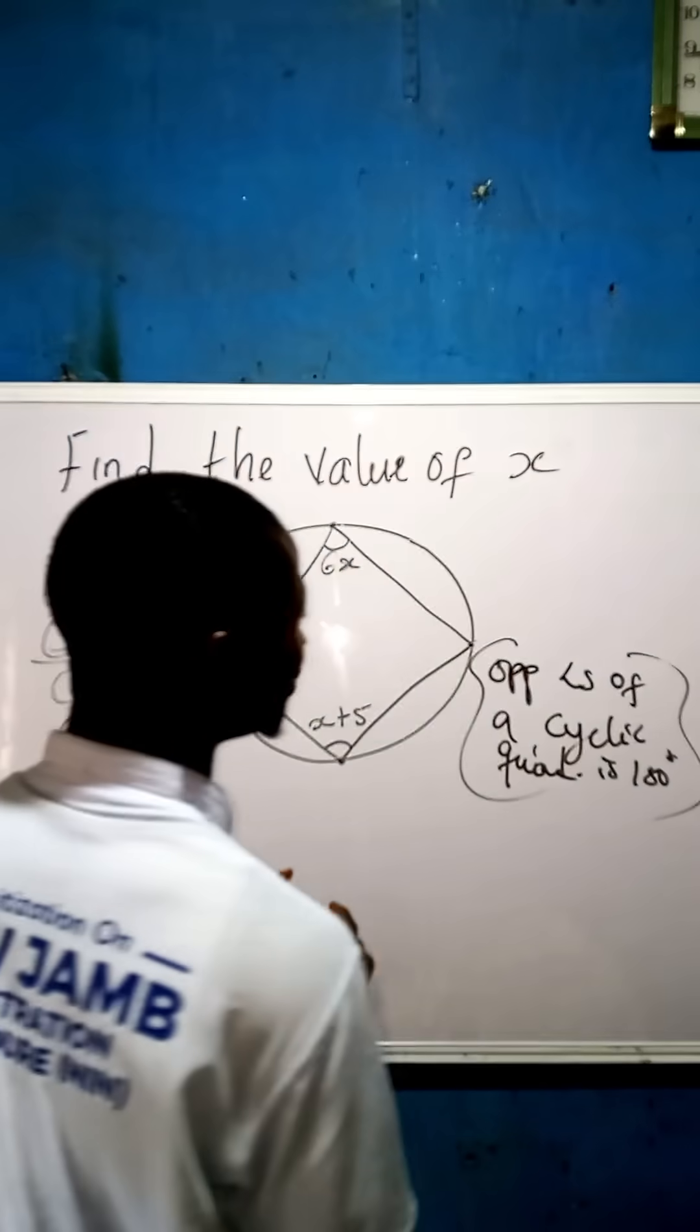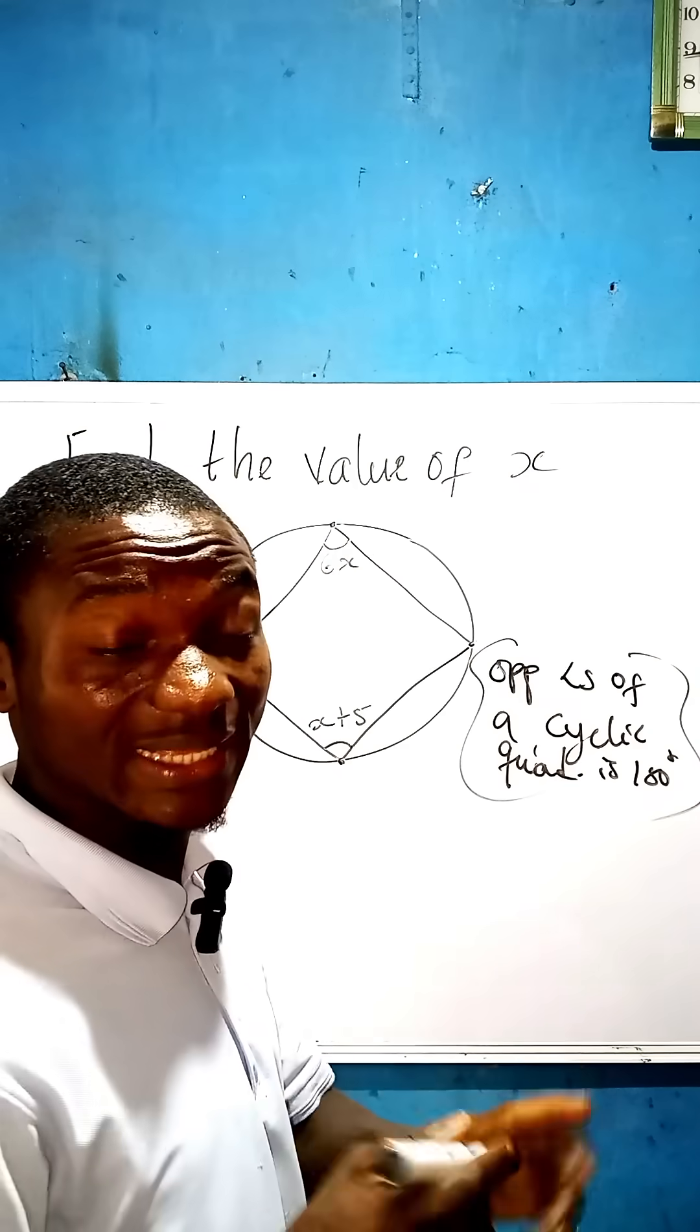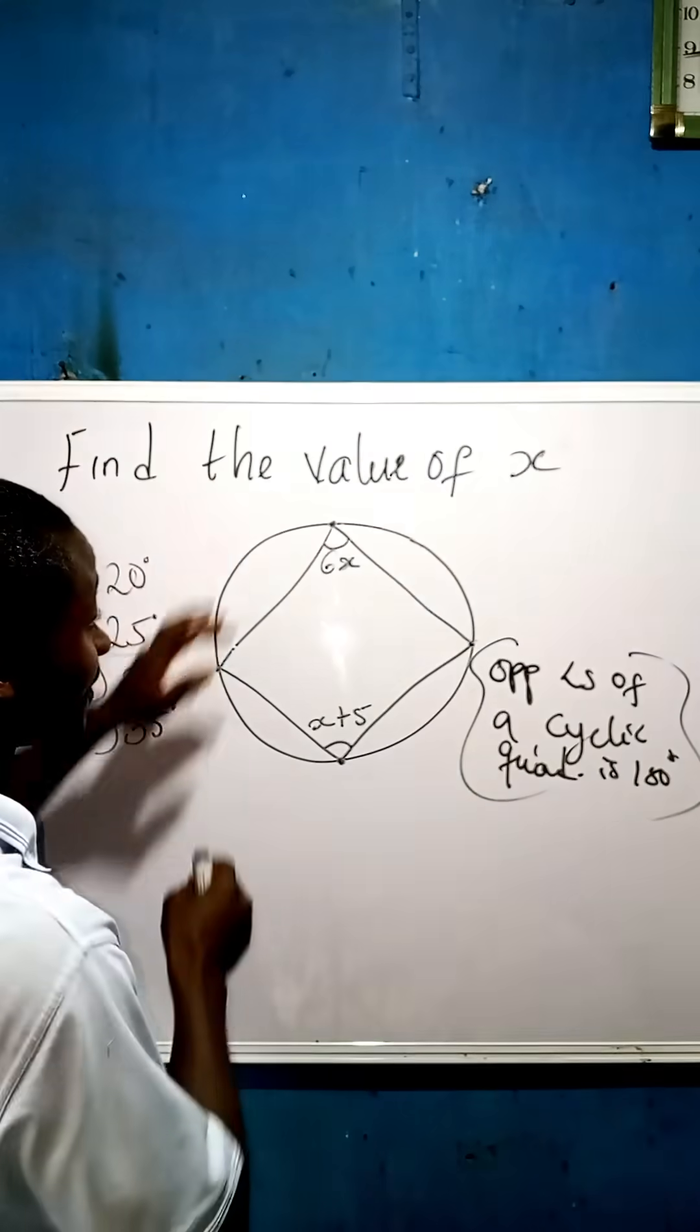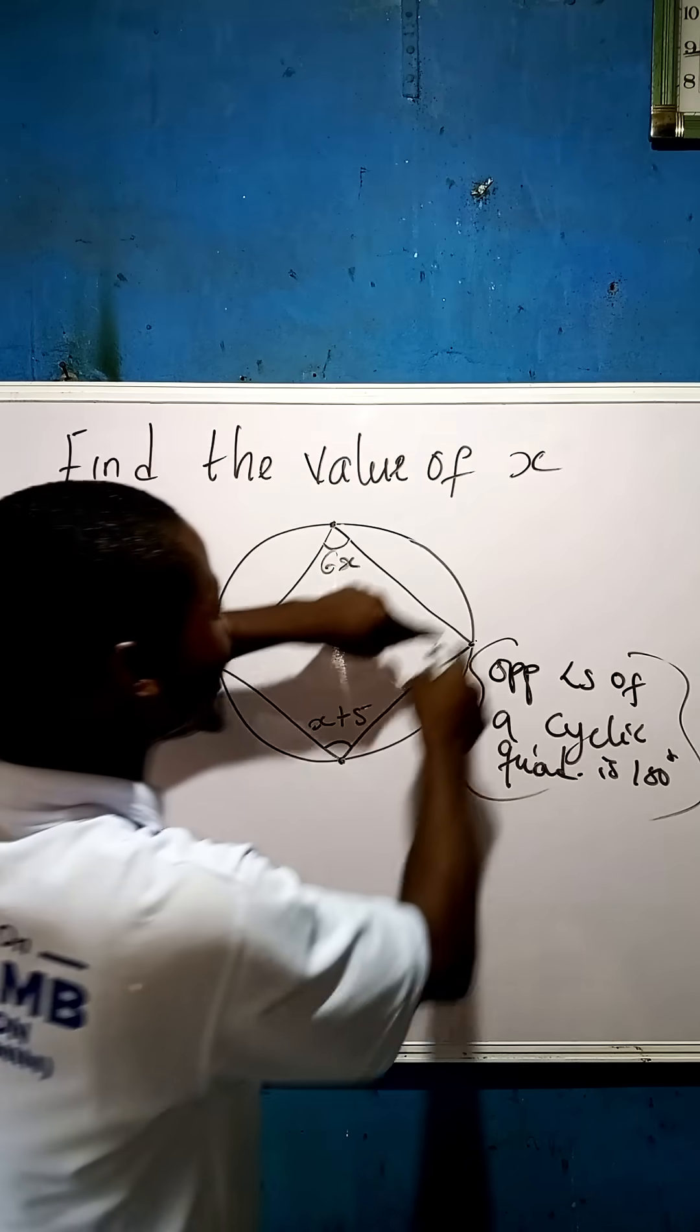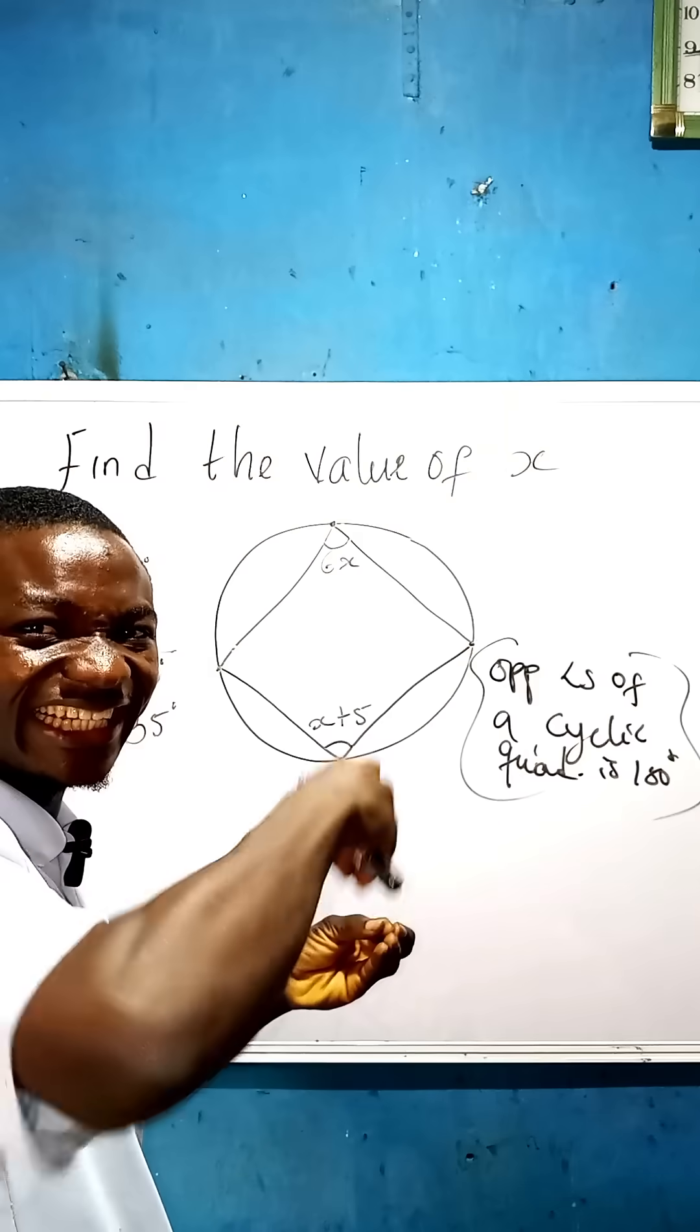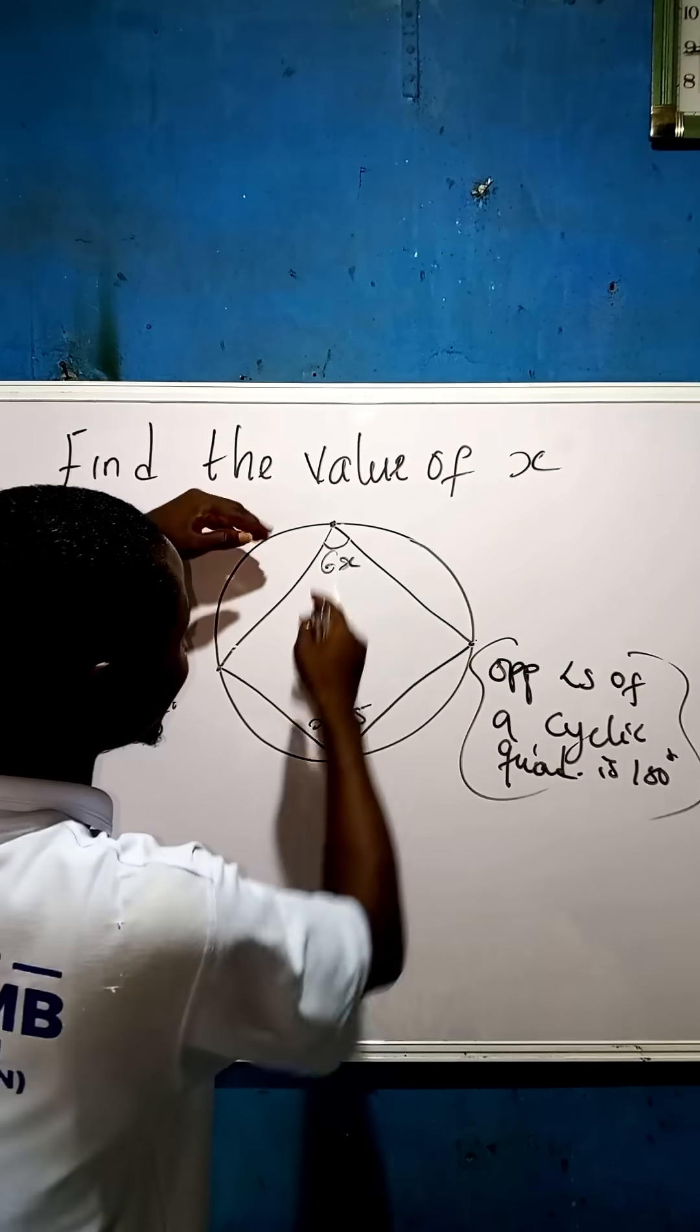Now, what that means is that this is a circle and there is a quadrilateral inside the circle. It's called cyclic quadrilateral. They join it together. It's a quadrilateral.